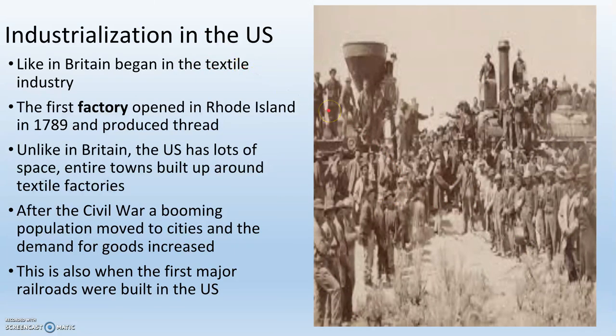Industrialization in the U.S. starts with the textile industry, just like it does in Britain. The first factory actually opens in Rhode Island, and it is a thread factory in 1789. It was actually a British man who had worked in cloth factories in England — he came to the United States, memorized all the blueprints for the machines, and started his own factory. The big difference between Britain and the United States is that the U.S. has lots of land, so we actually have entire towns built around textile factories, especially in the Midwest and Michigan area.